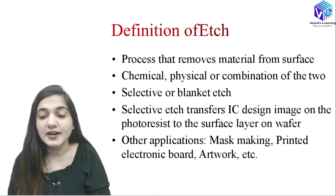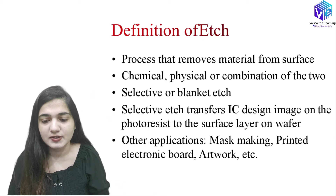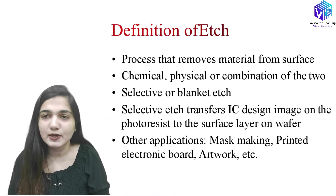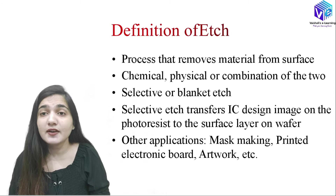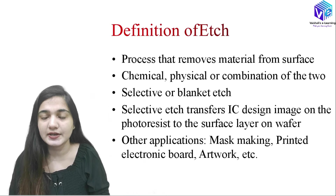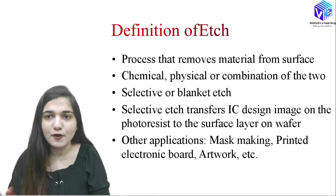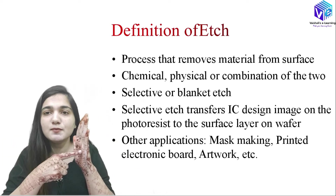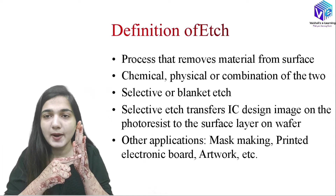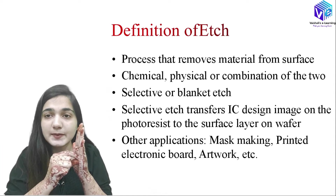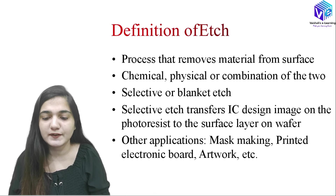The definition of etching: it is the process that removes material from a surface. It can be chemical, physical, or a combination of both. In chemical etching, we use chemicals to remove material from the surface. In physical etching, we take a physical action — for example, ion bombardment — to remove material. High-speed ions bombarded onto the surface will knock particles off, and this is physical etching.